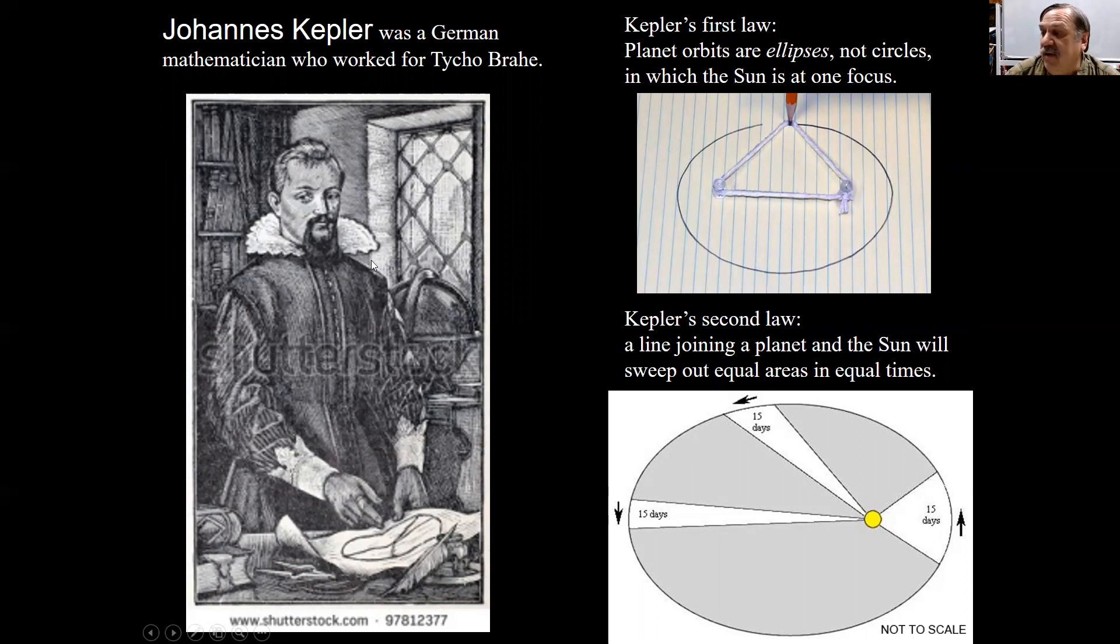Kepler got Tycho's notebooks after Tycho died and he examined them. It took 20 years of crunching numbers. No calculators or computers in these days, all by hand. And after a great deal of labor, Kepler came to the conclusion that these observations of Tycho were showing that the planets were doing three things that people hadn't noticed before. Therefore, called Kepler's laws of planetary motion, three laws.